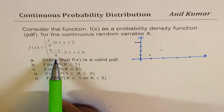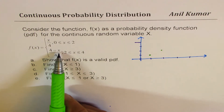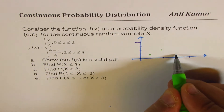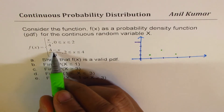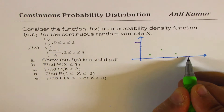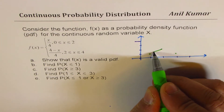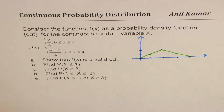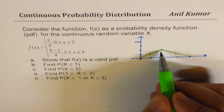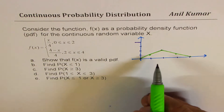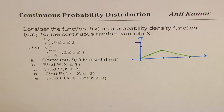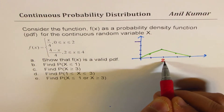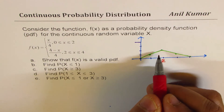Now for x greater than 2, we use (4 - x)/4. If I substitute x = 3: (4 - 3)/4 = 1/4, so it falls on the same line. If I substitute x = 4: (4 - 4)/4 = 0. So the probability distribution function can be sketched as a triangle with the peak right in the center, with the maximum value of 1/2 occurring at x = 2.